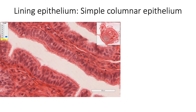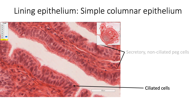The lining epithelium is made up of simple columnar epithelium showing two types of cells: ciliated cells and secretory non-ciliated peg cells. The ciliary current of the ciliated cells is directed towards the uterus, and this helps in the propulsion of the oocyte.